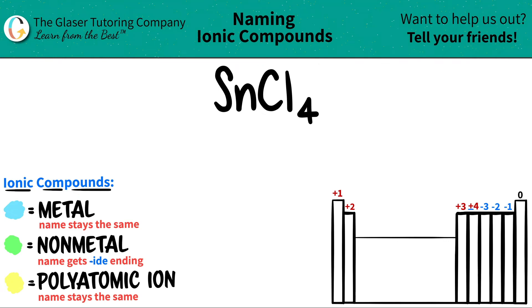Today, we are going to be naming the ionic compound SnCl4. Now, we have only two elements here. We have Sn, which is tin, and we have Cl, which is chlorine.